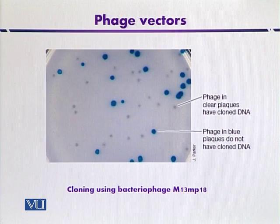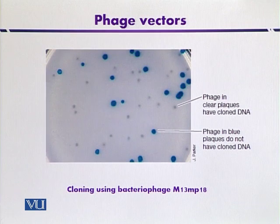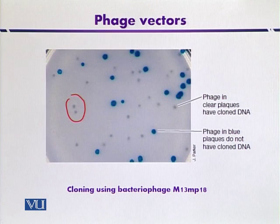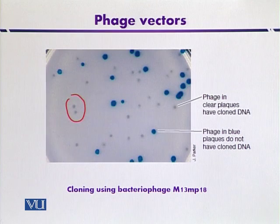To select recombinant DNA molecules, the modified M13 phages are used to infect E. coli host cells. Beta-galactosidase activity is monitored through plaque color. Colorless plaques indicate that beta-galactosidase has not been expressed due to insertional inactivation, meaning foreign DNA presence is indicated by colorless plaques.